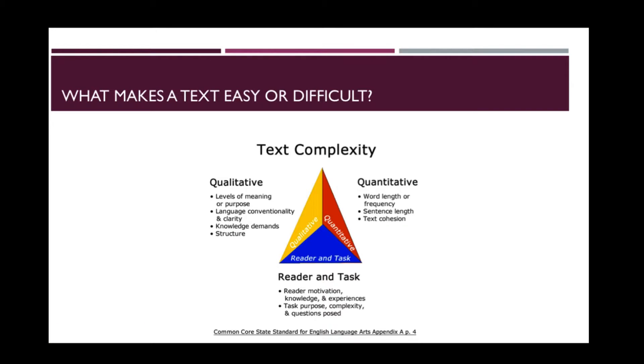What makes a text easy or difficult? Three components contribute to text complexity. Qualitative components such as levels of meaning or purpose, language conventionality and clarity, knowledge demands, or structure.